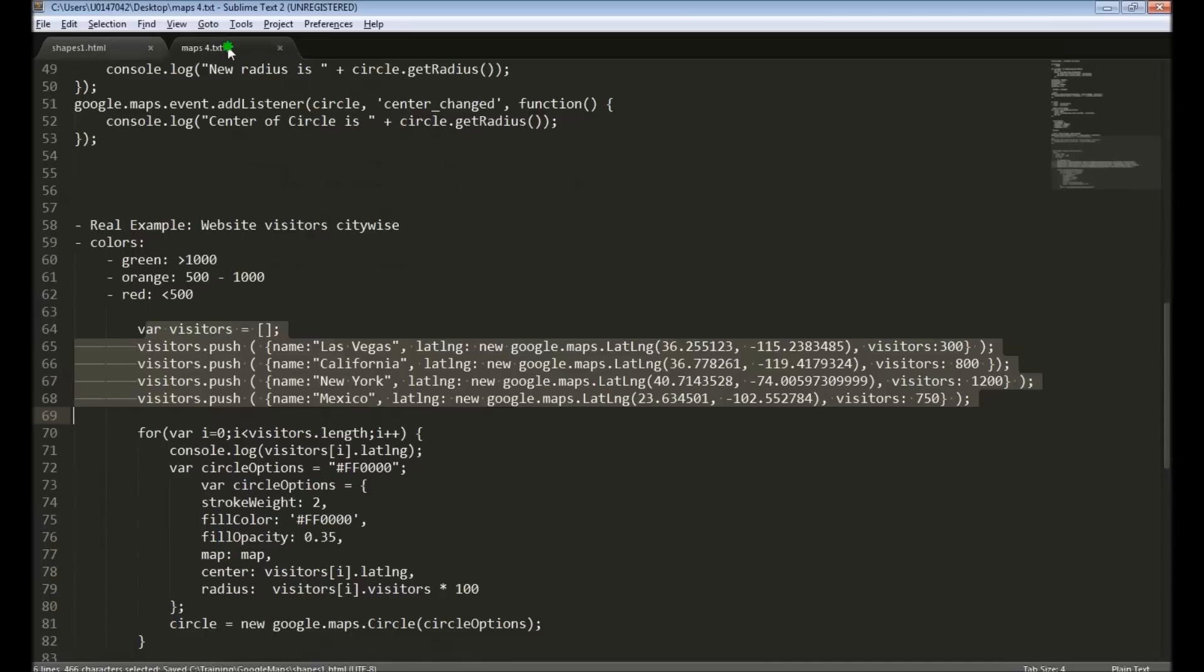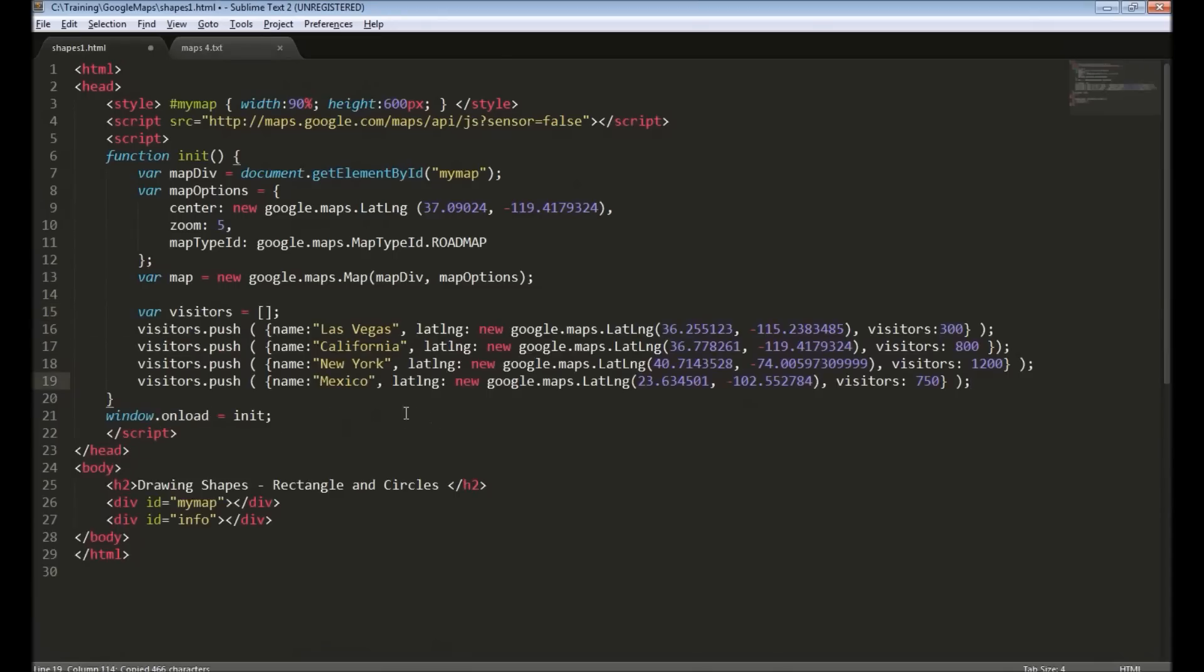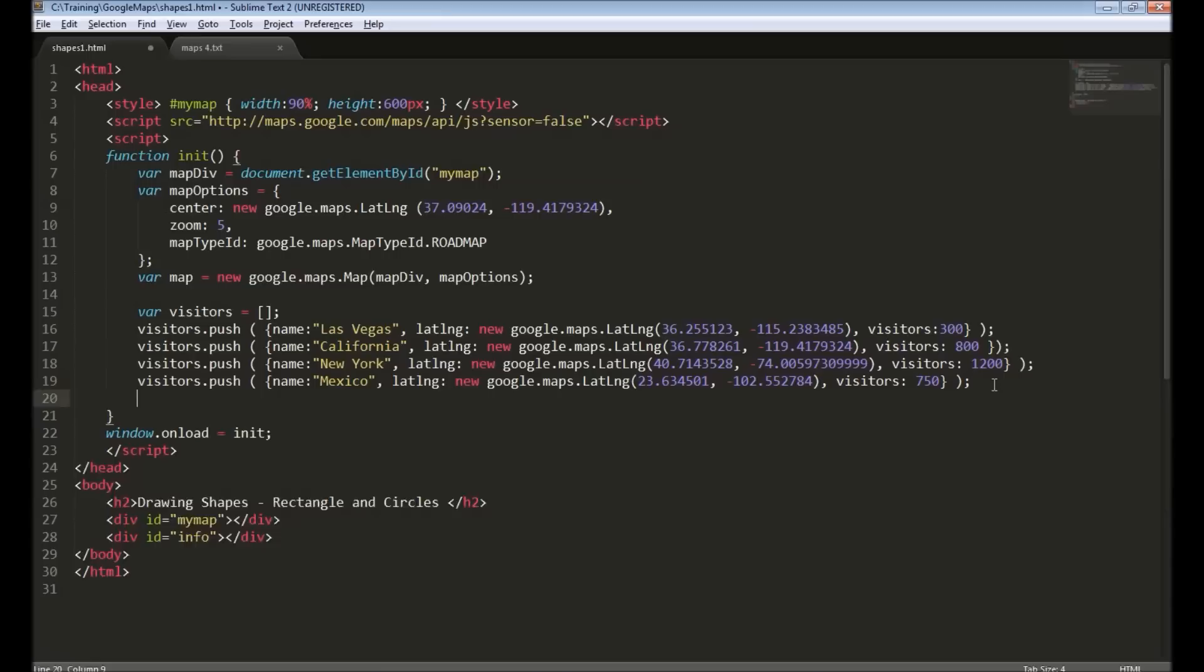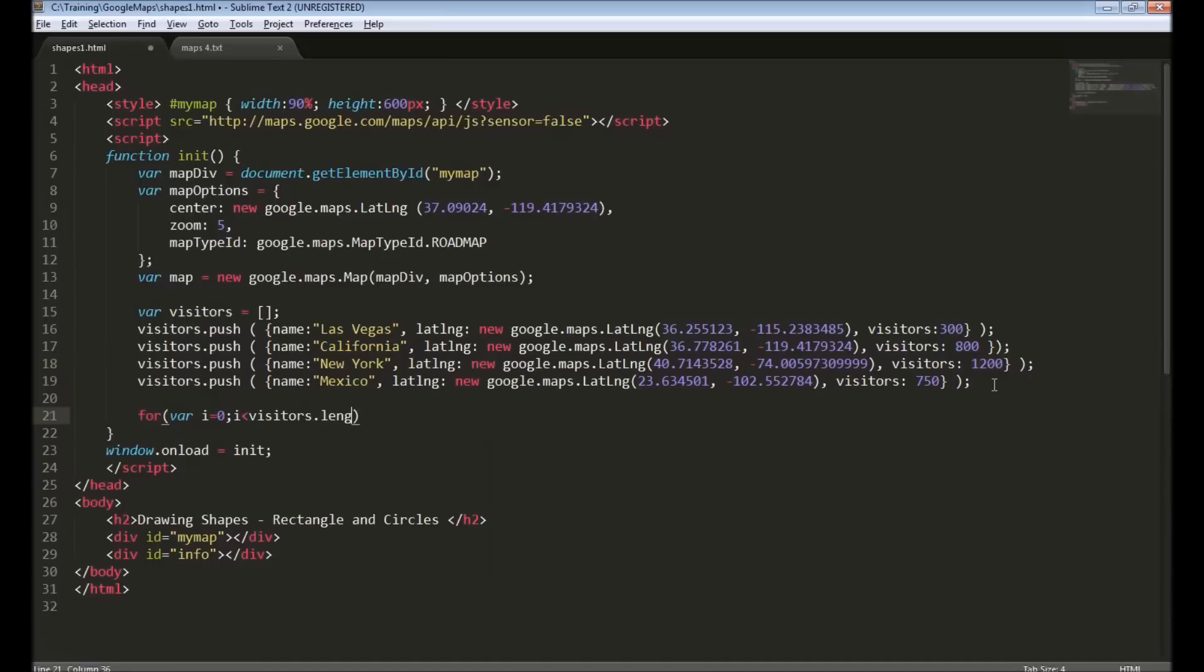First I need some data. So I have some data already defined as a JavaScript array. So I have an array called visitors, and visitors have some data like the name of the city, the lat long of the city, and visitors count. As we can see, Las Vegas has only 300 visitors, and California has around 800, and New York has some 1200 visitors. We can represent this in the map by drawing circles.